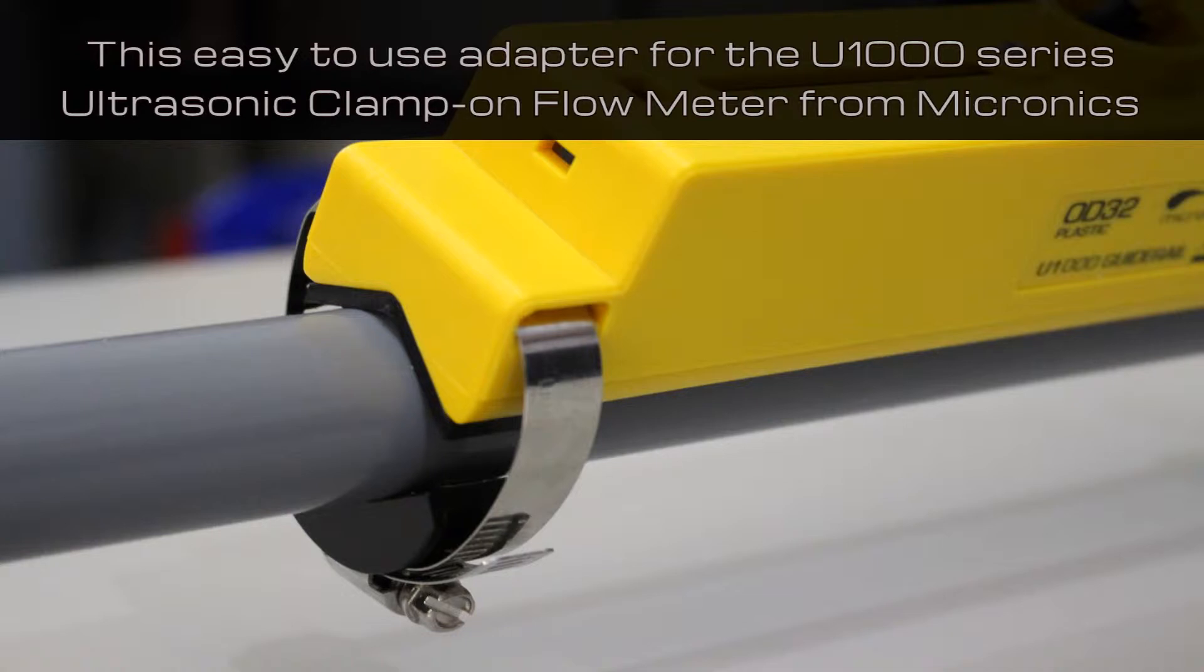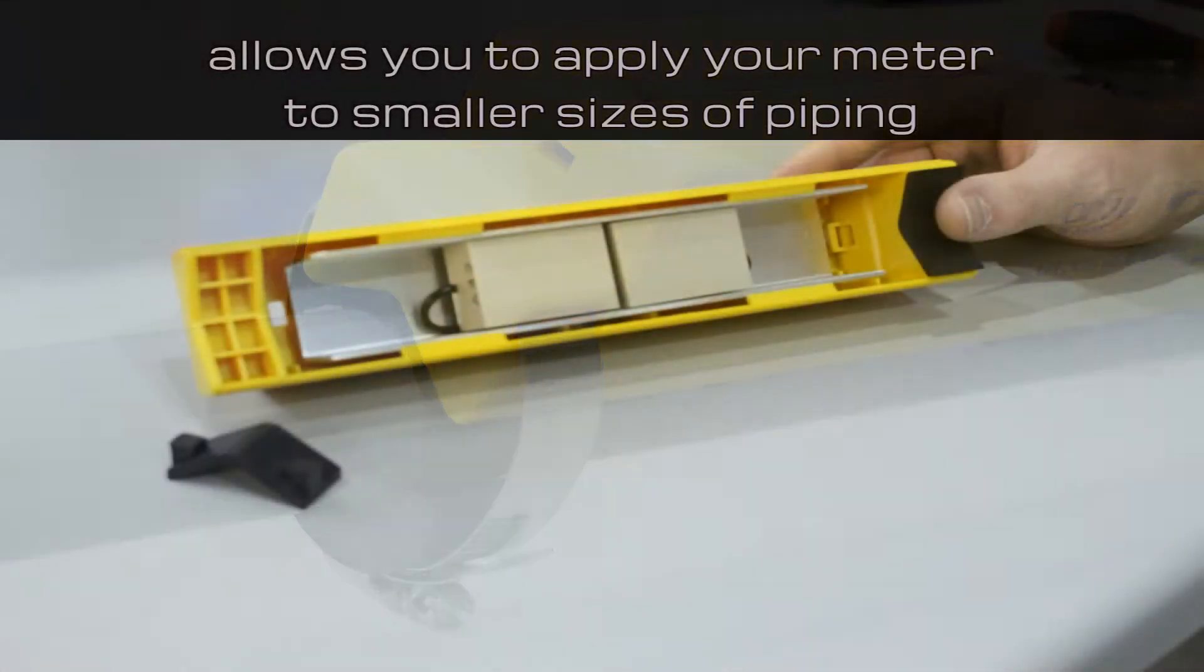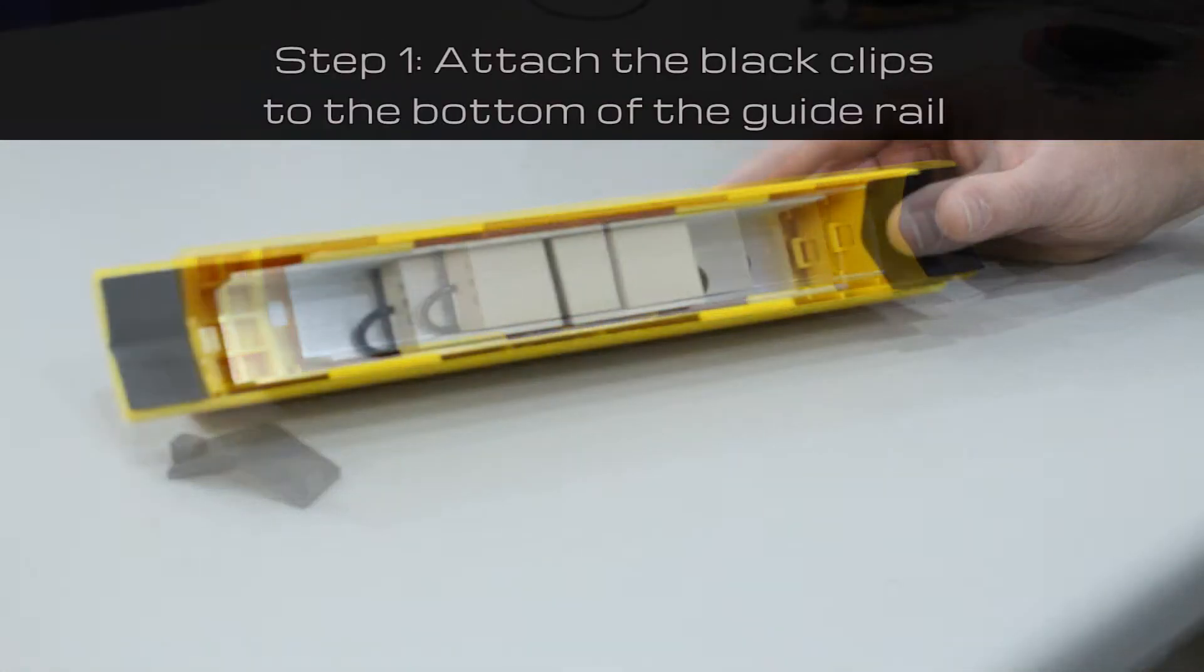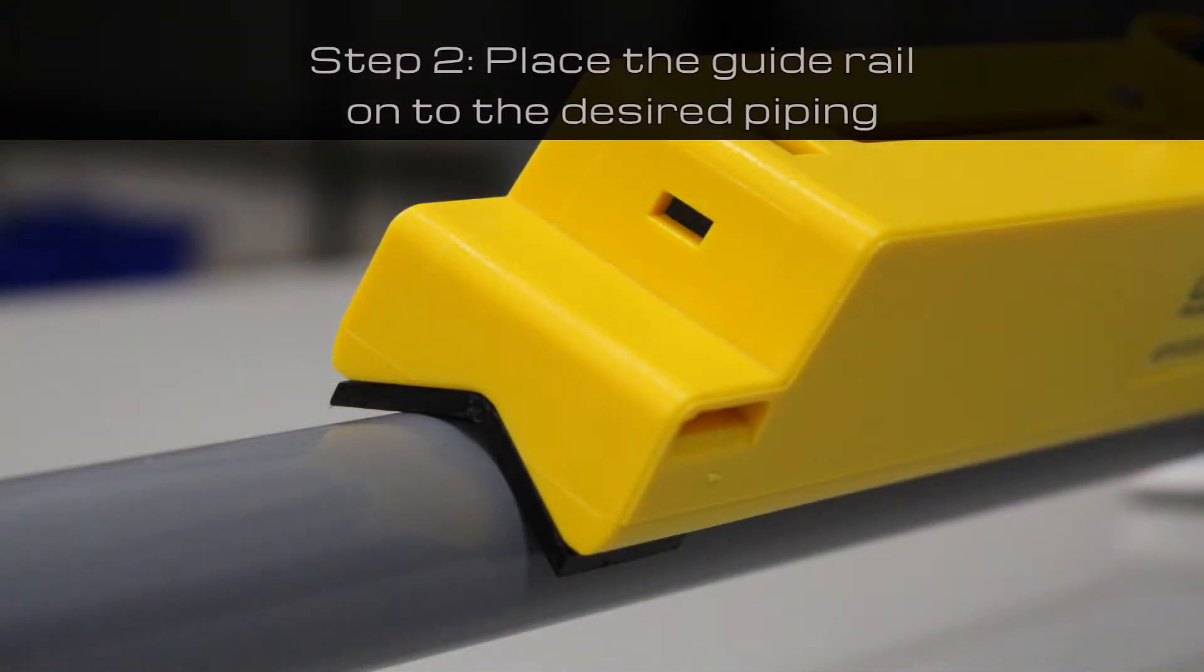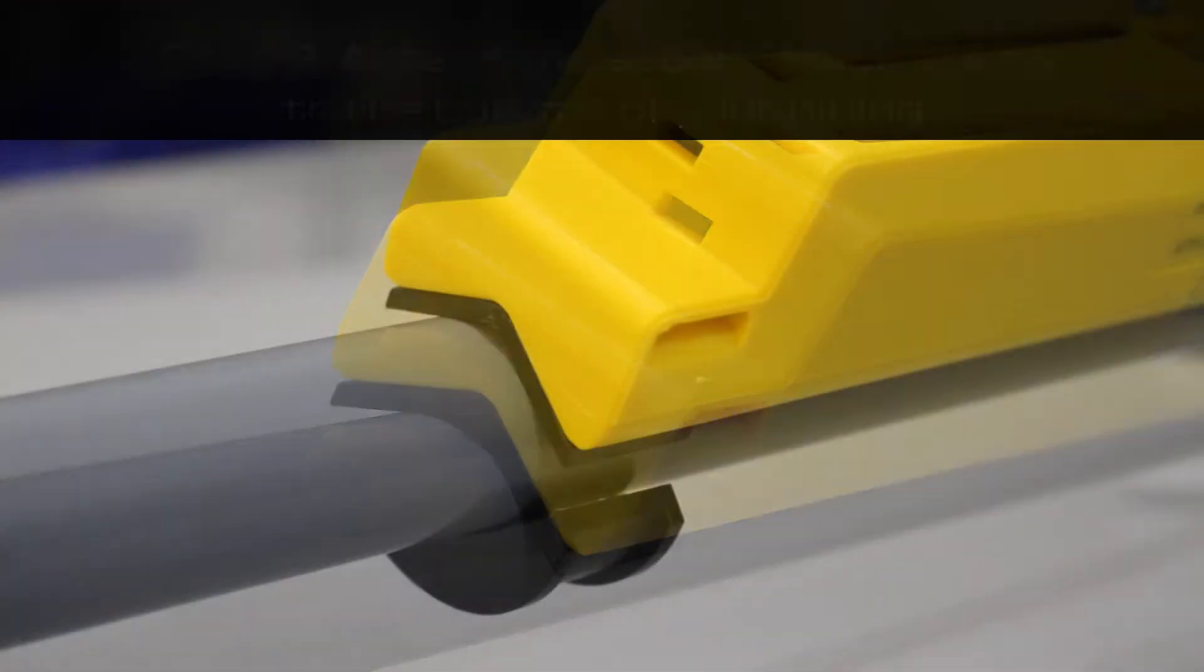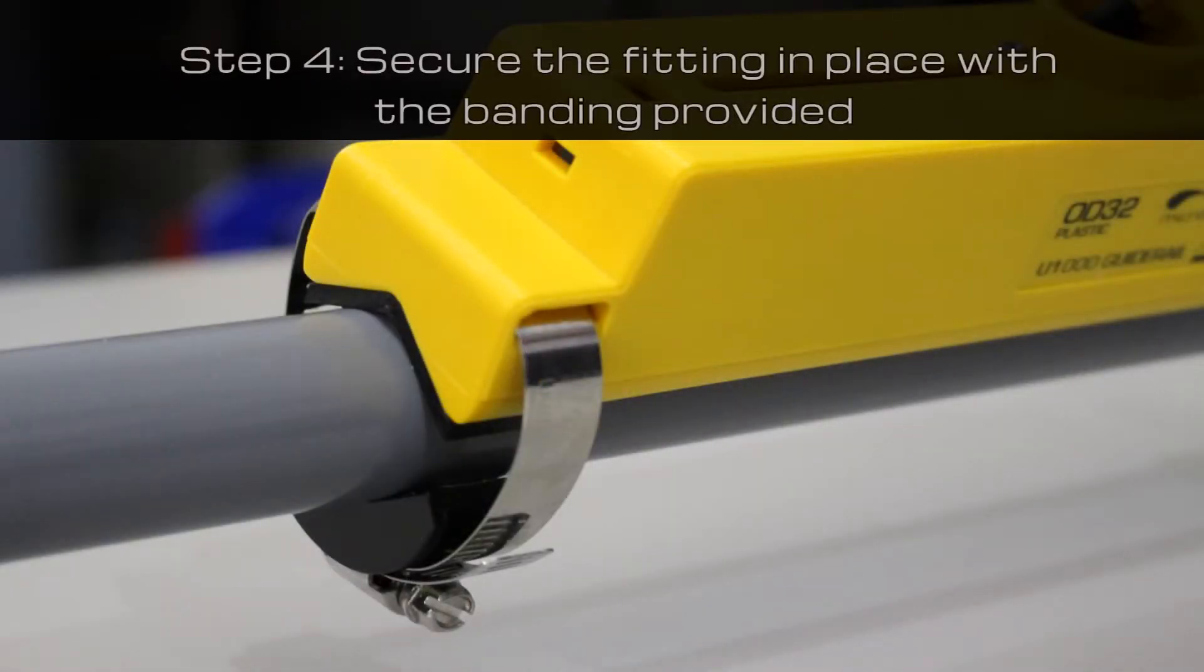This easy-to-use adapter for the U1000 series ultrasonic clamp-on flow meter from Micronix allows you to apply your meter to smaller sizes of piping. First, attach the black clips to the bottom of the guide rail, then place the guide rail on the desired piping. Attach the second black fitting to the bottom of your piping and secure the fitting in place with the banding provided.